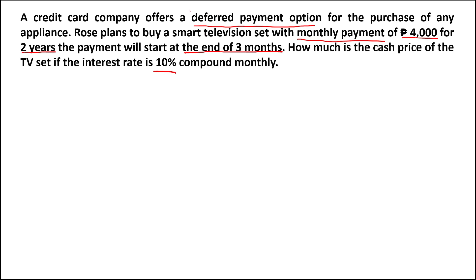This problem is a deferred annuity. First, we need to list all the given values. P4,000 is the periodic payment or the regular payment, so R is equal to 4,000. Since it is a monthly payment, the payment interval M is equal to 12 because there are 12 months in a year.